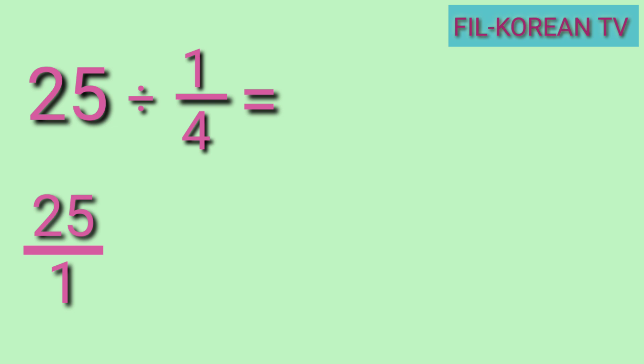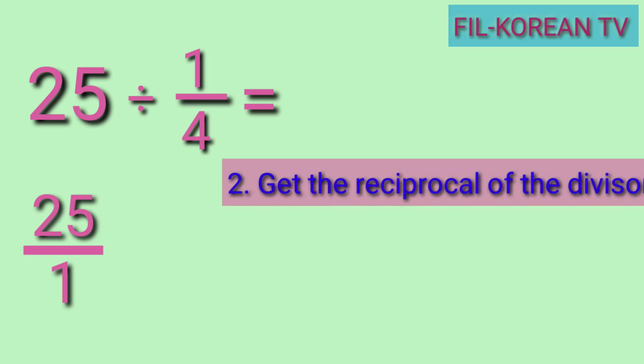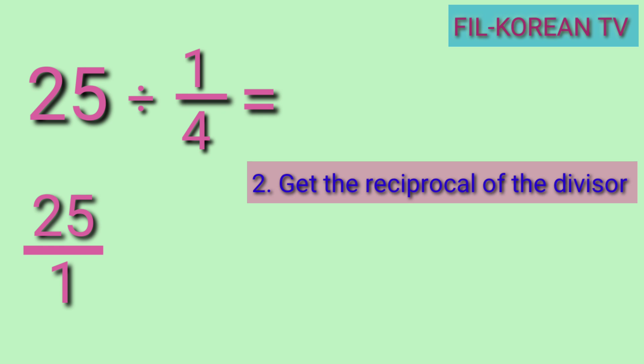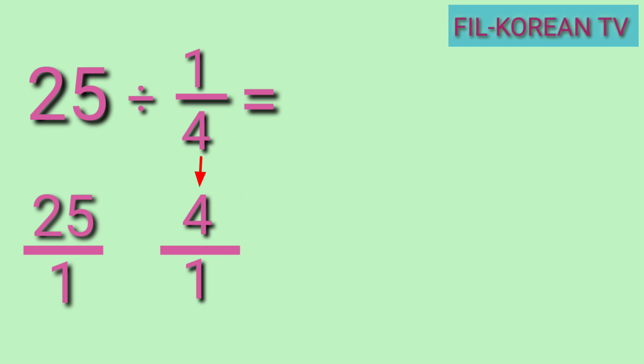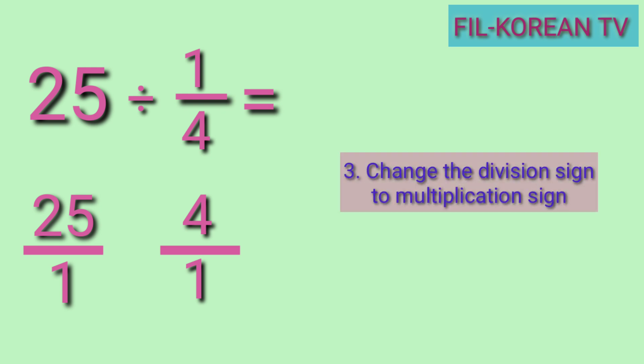Next step: get the reciprocal of the divisor. The divisor is 1 fourth. Its reciprocal is 4 over 1. To get the reciprocal of a fraction, just exchange the position of the numerator and the denominator.